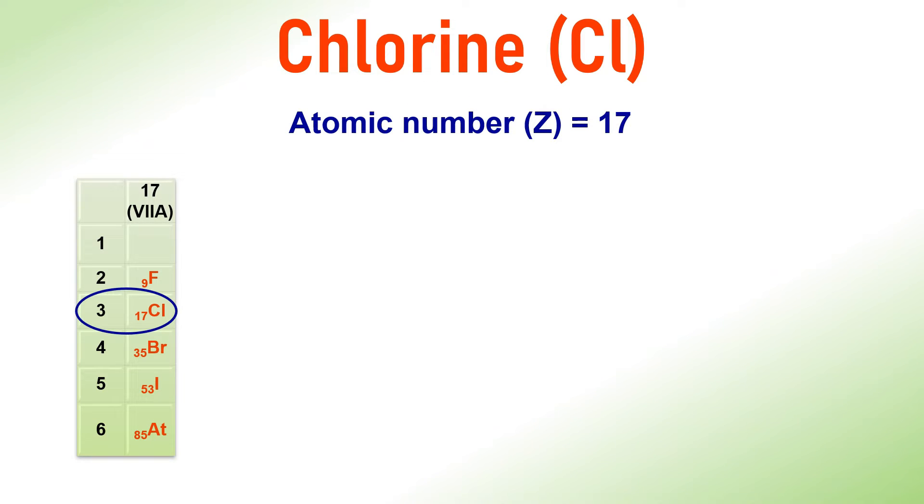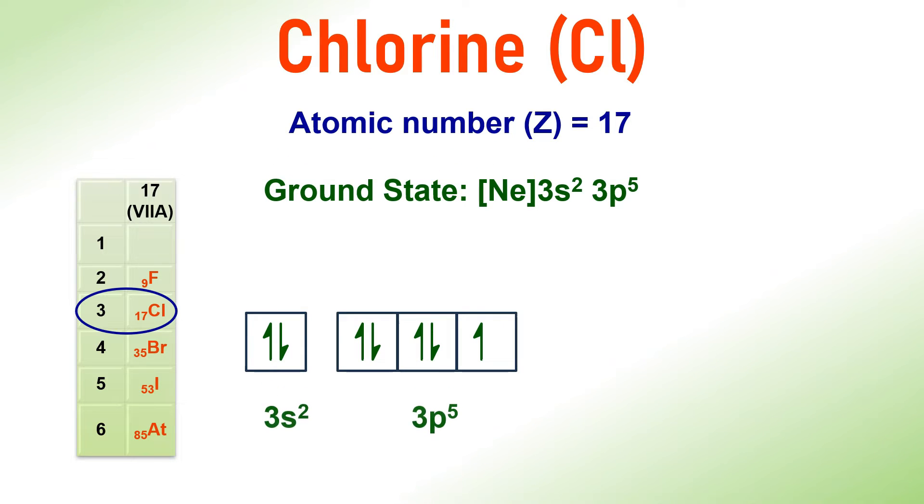For Chlorine atom, the atomic number is 17 and the ground state electronic configuration is [Ne] 3s2, 3p5. However, it is worth noting that the third shell also contains an empty d subshell. Therefore, the electronic configuration can be [Ne] 3s2, 3p5, 3d0.